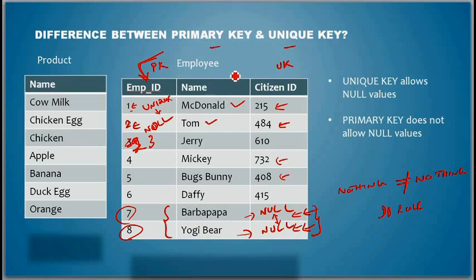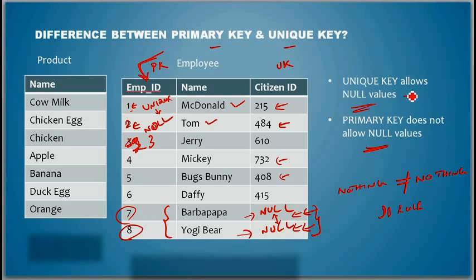That's the difference between the primary key and the unique key. Primary key does not allow null values; unique key allows null values. Other than that, both primary key and unique key enforce uniqueness.